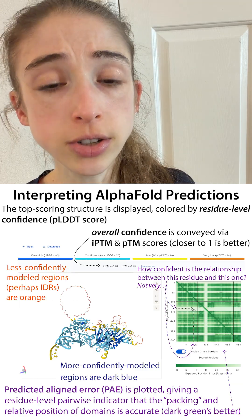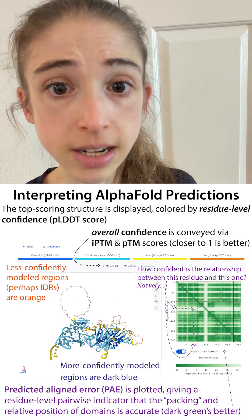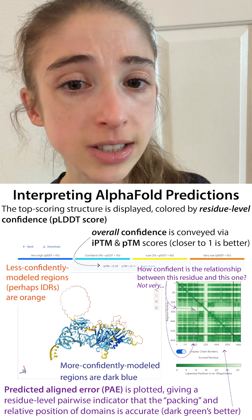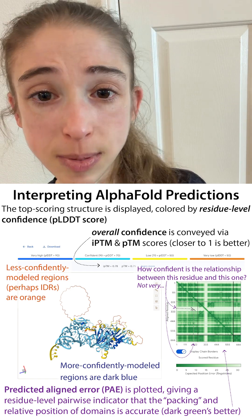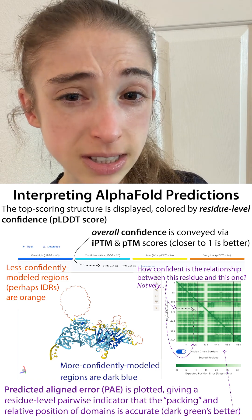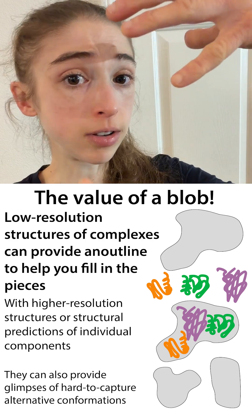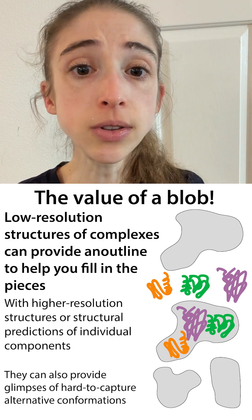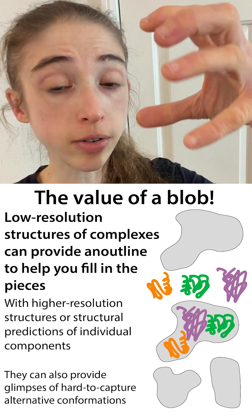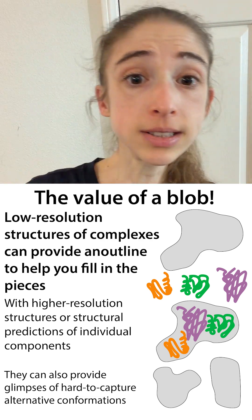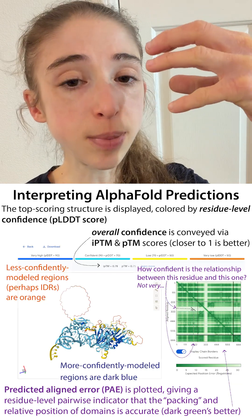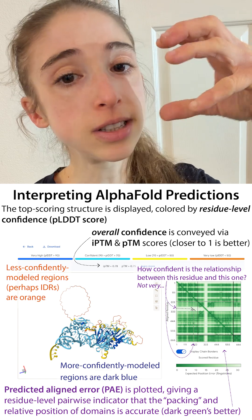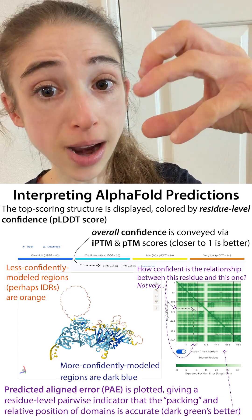Increasingly, you also have structures that are predicted using tools like AlphaFold. Resolution doesn't apply here, so instead you need to be thinking about confidence levels. By having the overall shape, you can set constraints that tell the software where something is going to go — not somewhere else — which limits the search space the software has to go through to determine what's most likely correct.